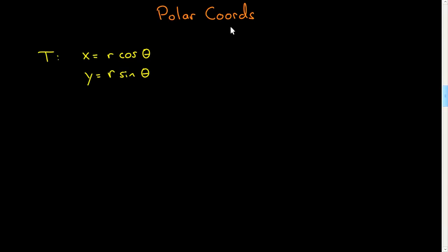In this screencast, I'm going to consider polar coordinates in the context of a nonlinear transformation for doing integration. Here I've written the transformation, a nonlinear transformation between r and theta and x and y. I'm going to use the natural variables r and theta rather than u and v, but if you want, you can think of r as u and theta as v.